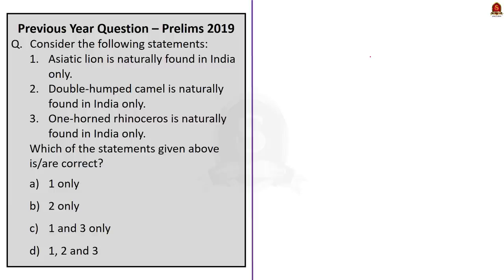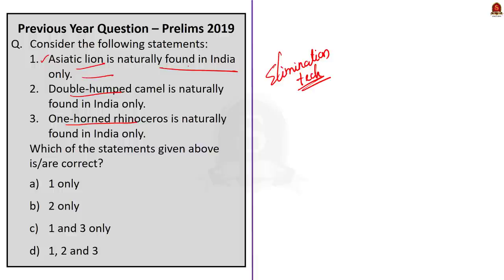The first question is a three-statement question. Whenever you get a statement type of question, try applying the elimination technique. This question talks about three different species: one is Asiatic lion, another one is double-humped camel, and another one is one-horned rhinoceros. If I attempt this question, I very well know about the Asiatic lion — it is found only in India, so that statement is absolutely correct. But if I know that statement one is correct, can I go ahead for the elimination technique? No. So let me look at statement two or statement three.